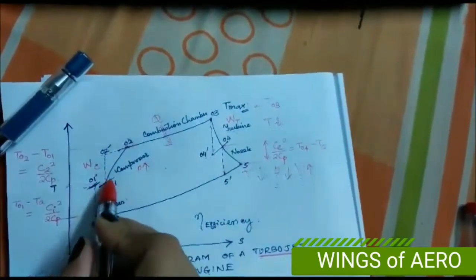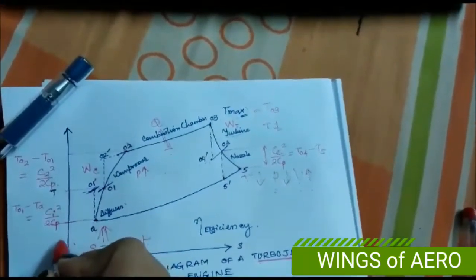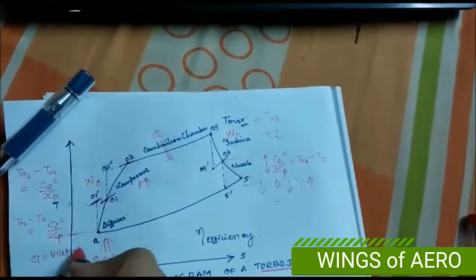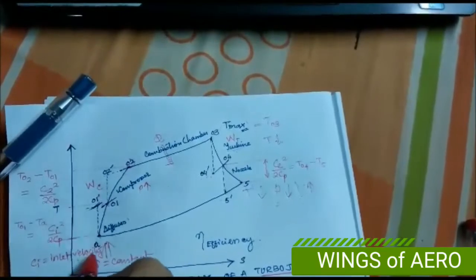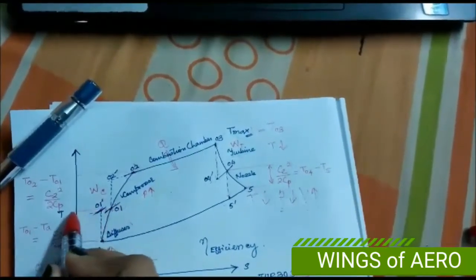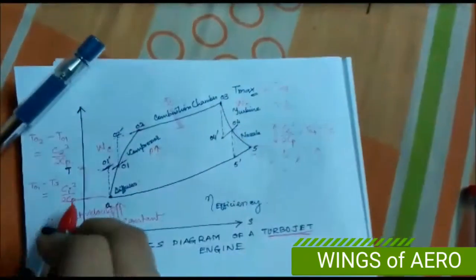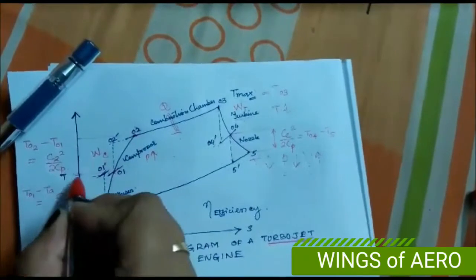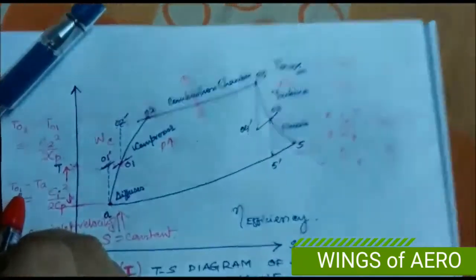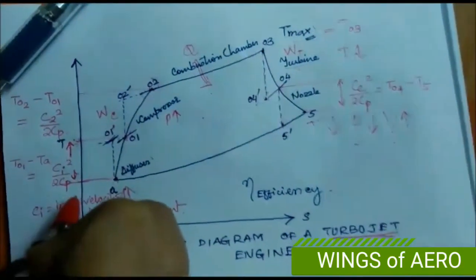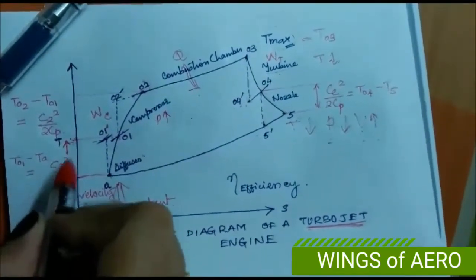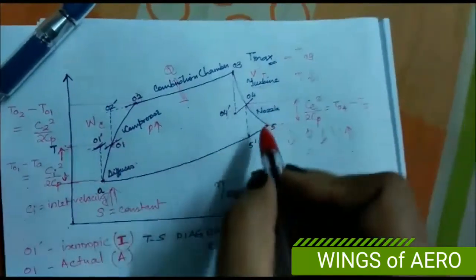From the diffuser, C_i is the inlet velocity. The difference between point A and 0-1, measured as a horizontal distance, can be expressed as C_i² / (2·C_p). That is: T01 − T_a = C_i² / (2·C_p). This relation applies when inlet velocity data is provided in a problem.